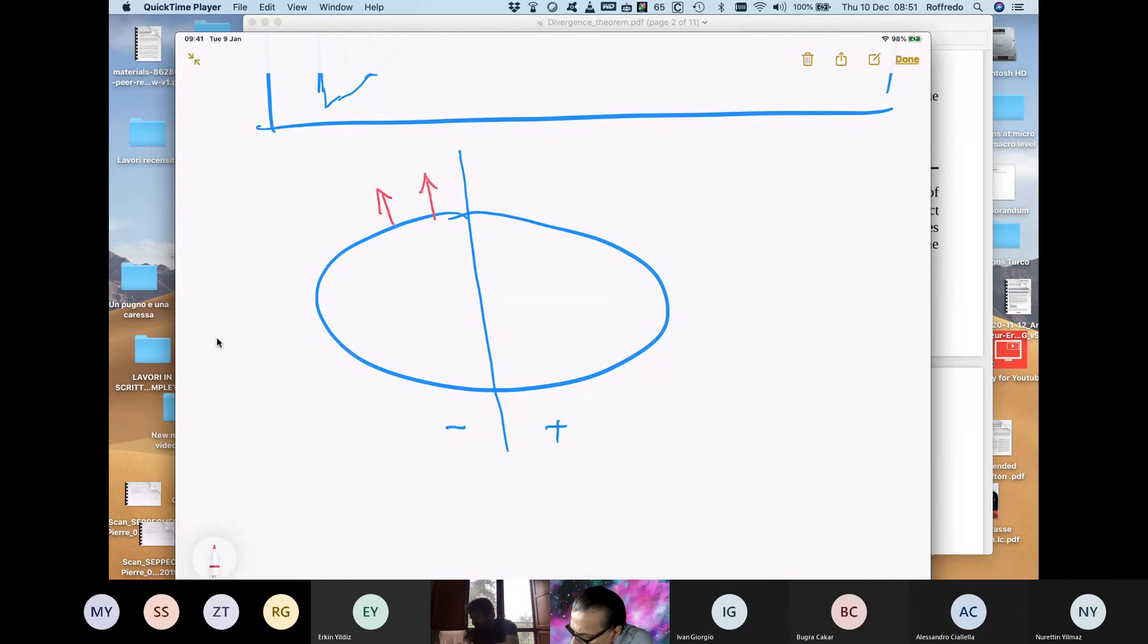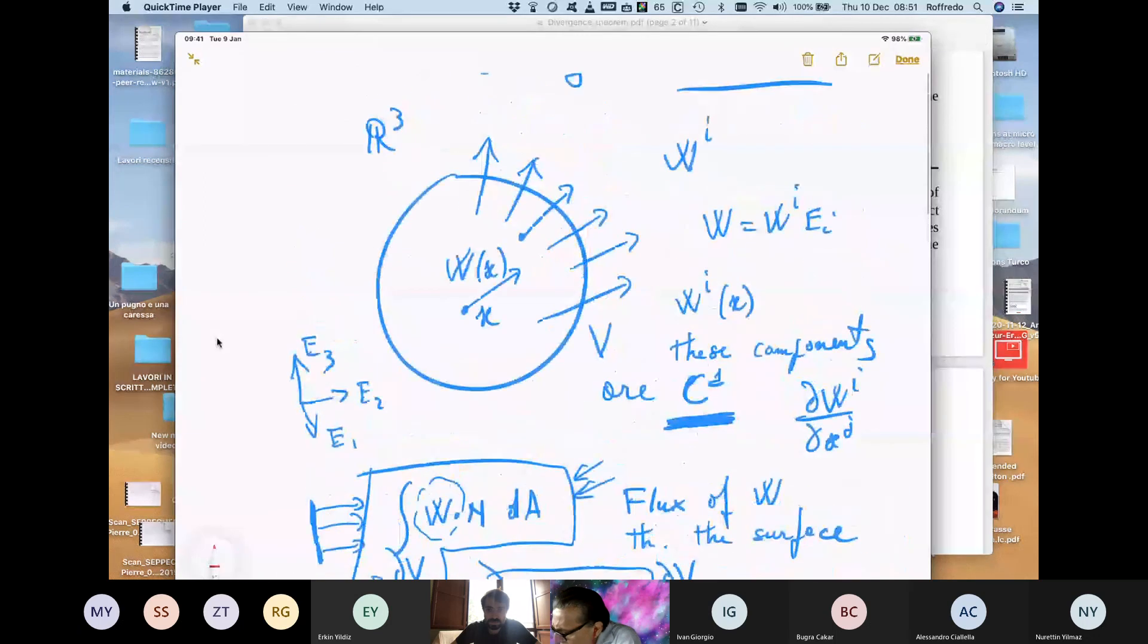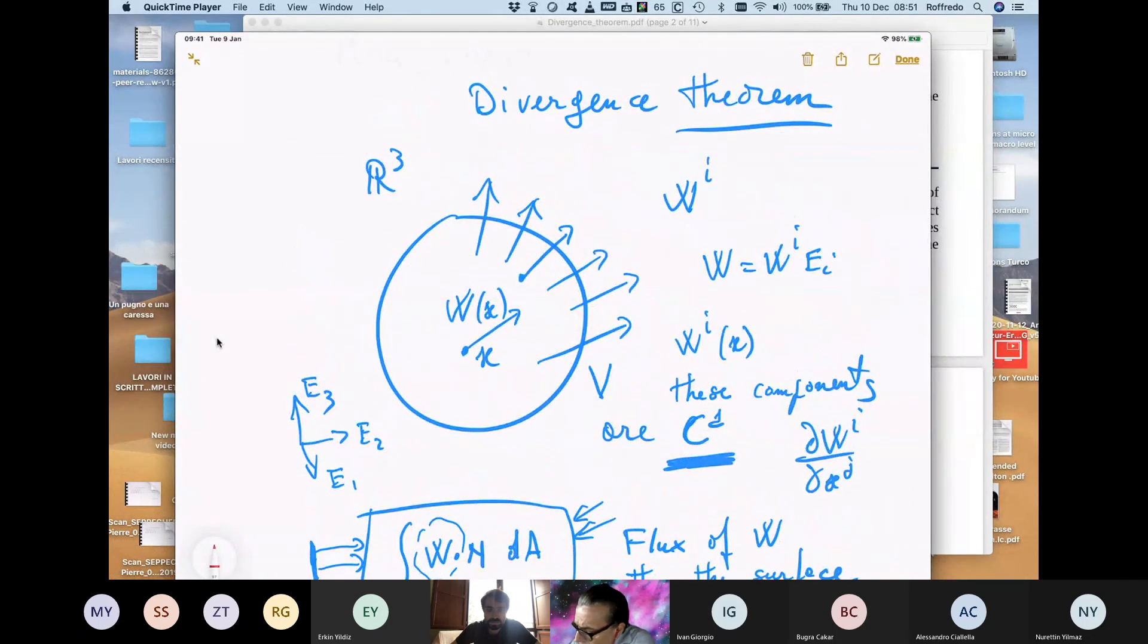Let us draw in red the outer normal of the minus side. And here we have these normals, these are the outer pointing normal. Ah, okay, sorry, sorry.